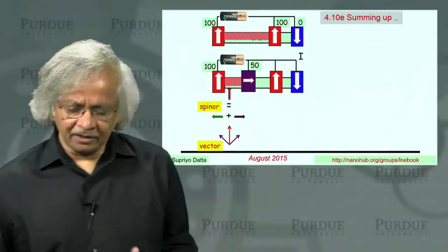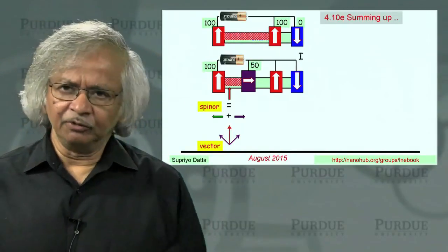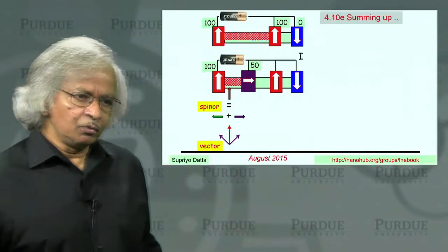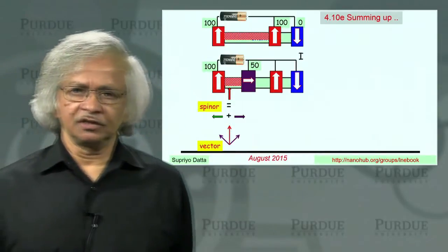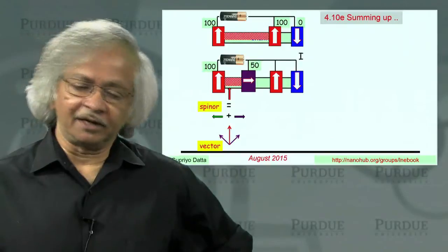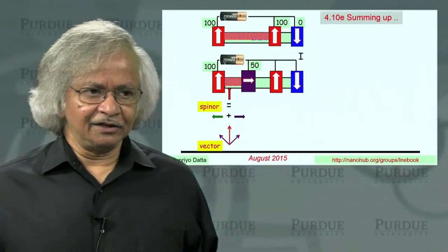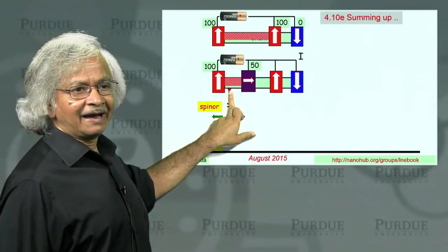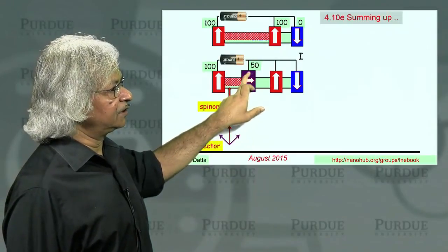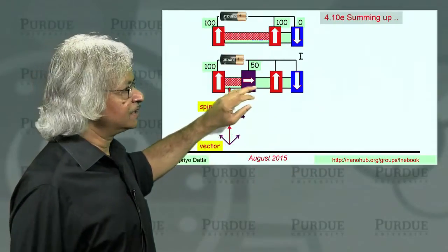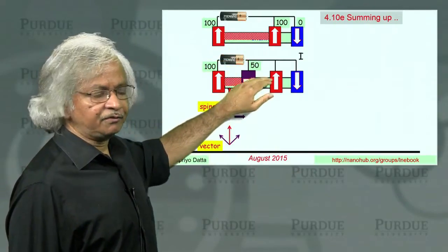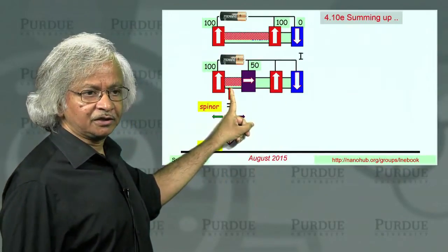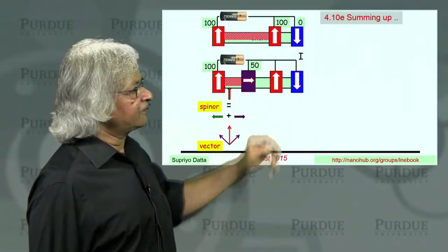But for an individual electron, the interpretation is probabilistic, which raised many conceptual issues in the early days, and even bothers some people today, because it means that the probability is kind of inherent. It's not a lack of knowledge. We know that the spin points up, and yet we cannot tell whether a particular electron will come out here or go on this way. All we can tell is there's a 50 percent chance it will go this way and 50 percent chance it will go that way, even though there's no lack of information. We know exactly what direction it points.